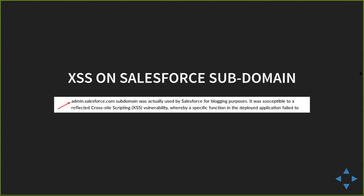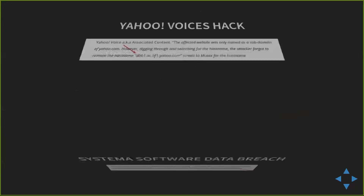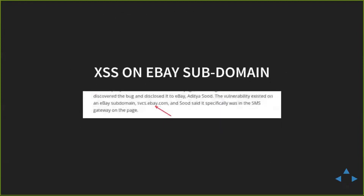To give historical examples: there was XSS on admin.salesforce.com, a Yahoo Voice hack from 2011 where millions of records leaked from a subdomain, a Systema Software breach where 1.5 million US insurance records were publicly available on an AWS subdomain, and XSS on an eBay subdomain. These prove that a lot of subdomains can have critical vulnerabilities, so it's important for pen testers and bug hunters to find them all.